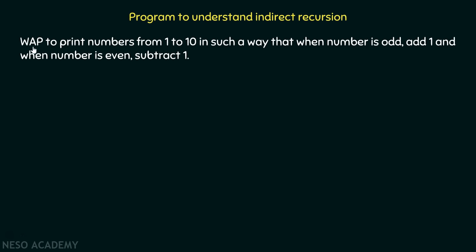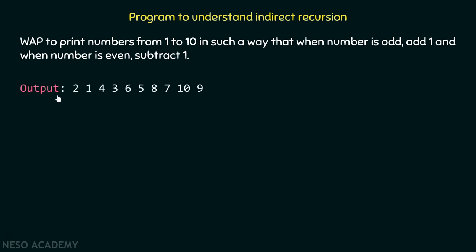Write a program to print numbers from 1 to 10 in such a way that when a number is odd, add one, and when a number is even, subtract one. You want this program to produce an output where when you encounter an odd number, you add one to it, and when you encounter an even number, you subtract one from it. That's what we have to do — we have numbers from one to ten.